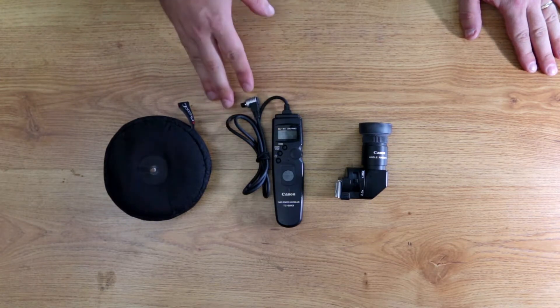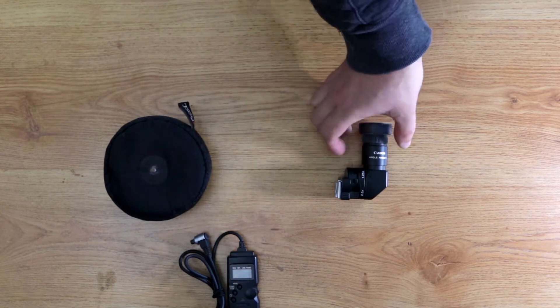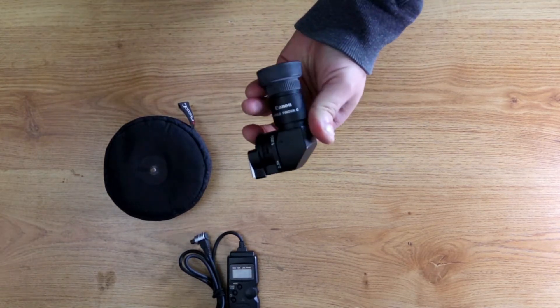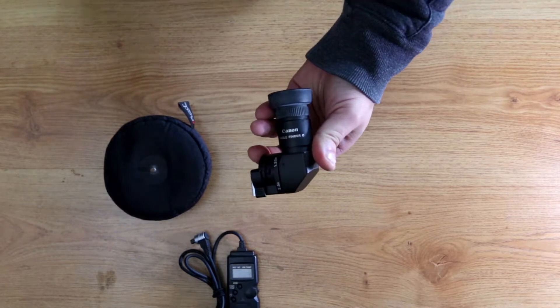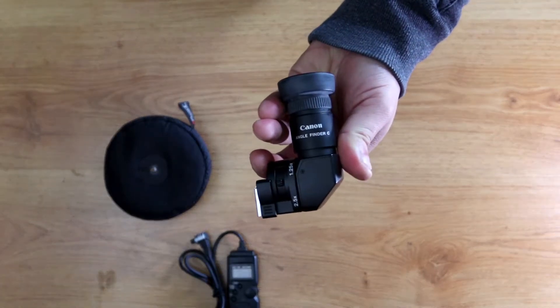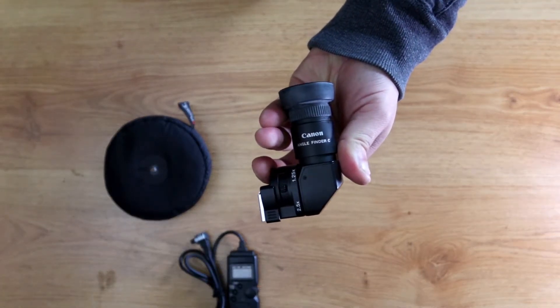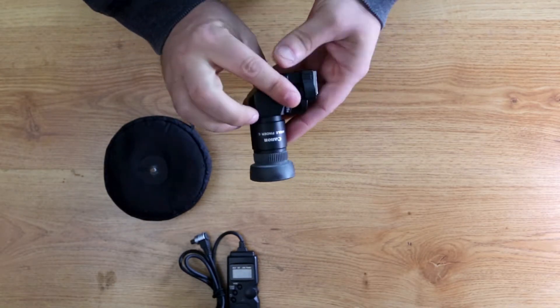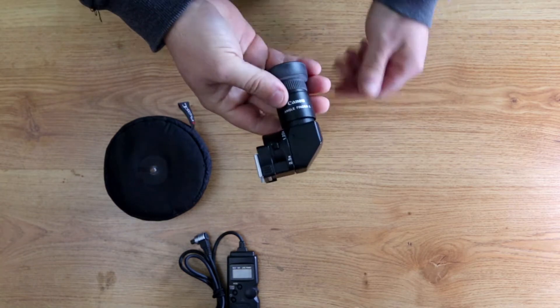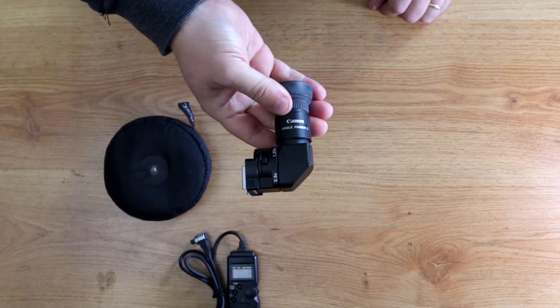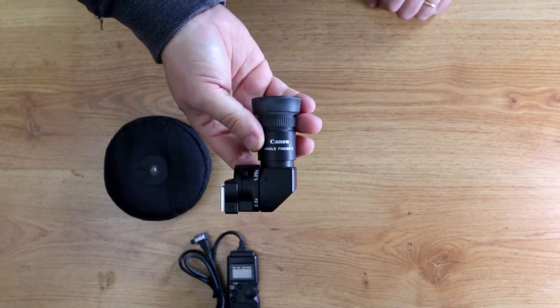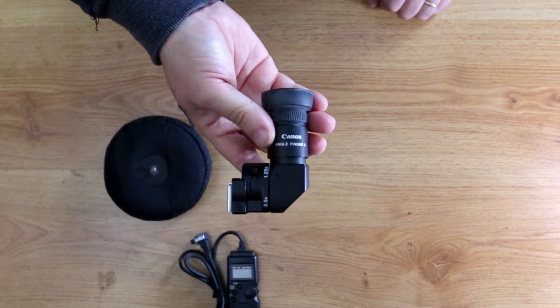The next thing, a lot of people haven't seen these guys. This is an angle finder. See if I keep it in focus here. So this clips on to your viewfinder on the back and there's multiple adapters and there's a bunch of different companies that make these. This one is straight from Canon and it's the angle finder C.